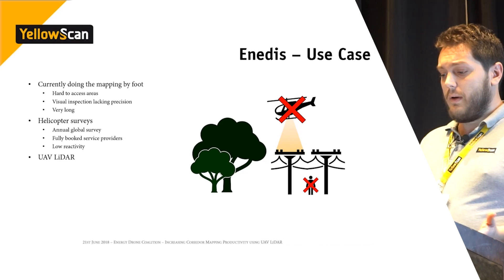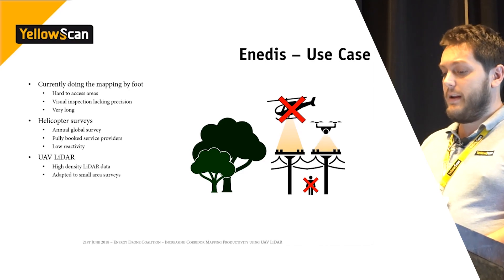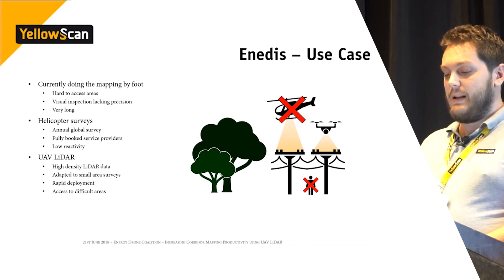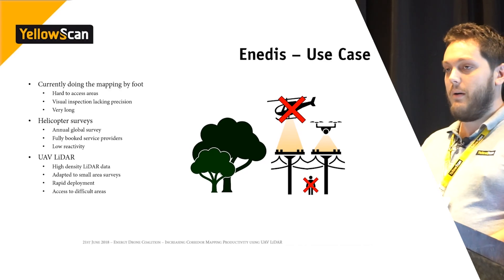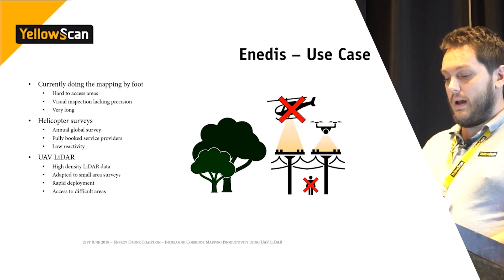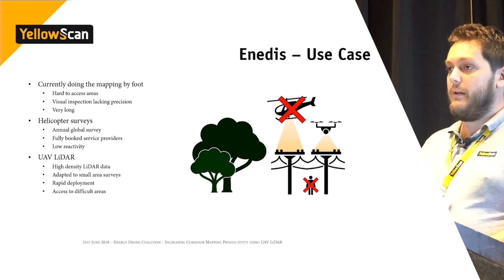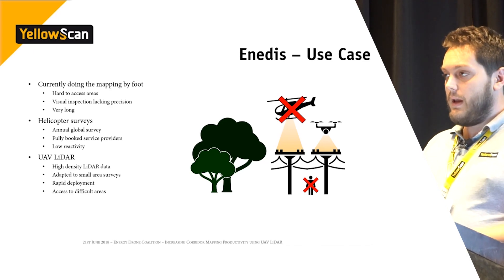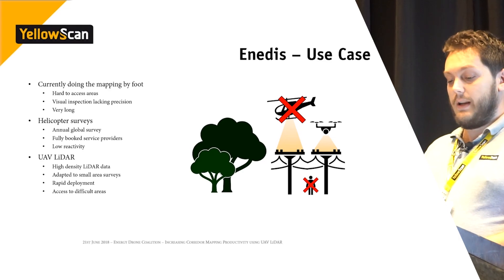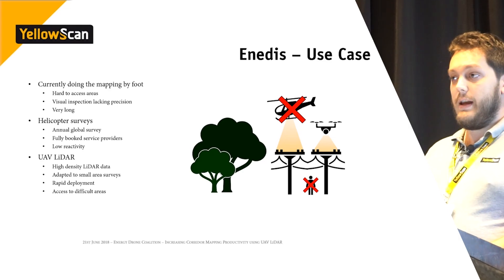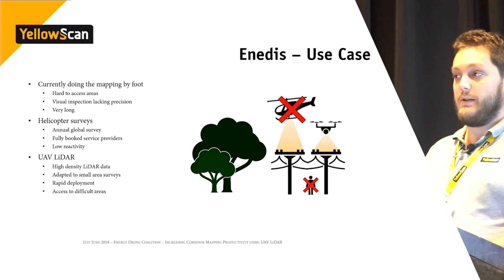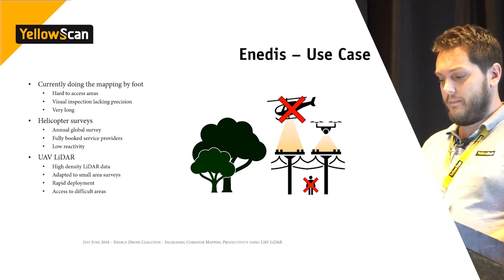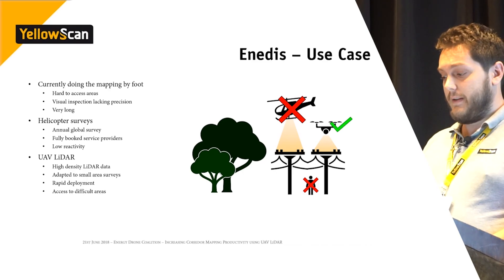So what about UAV LiDAR? It provides high density LiDAR data, which is good for power lines. It's adapted to small area surveys, so they can do targeted surveys. It has very fast deployment and you have access to difficult areas because you're flying above them but not too high. Looks like the perfect fit.